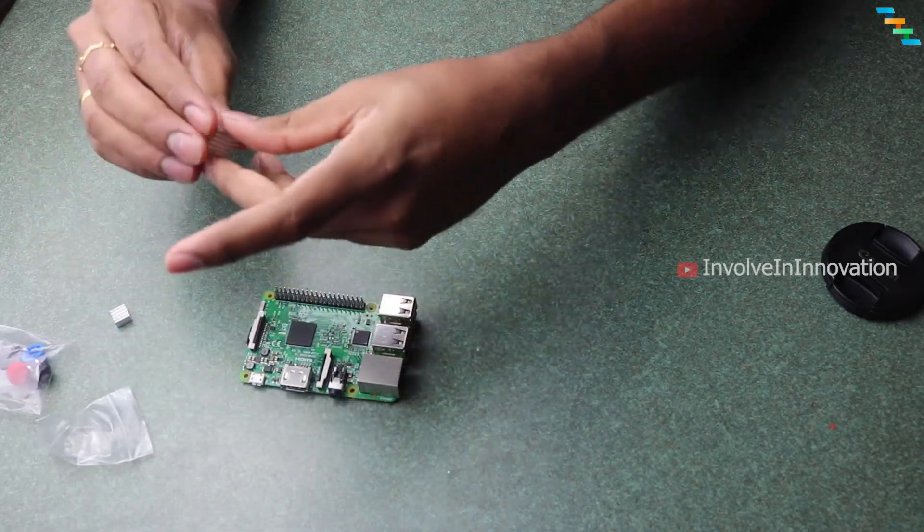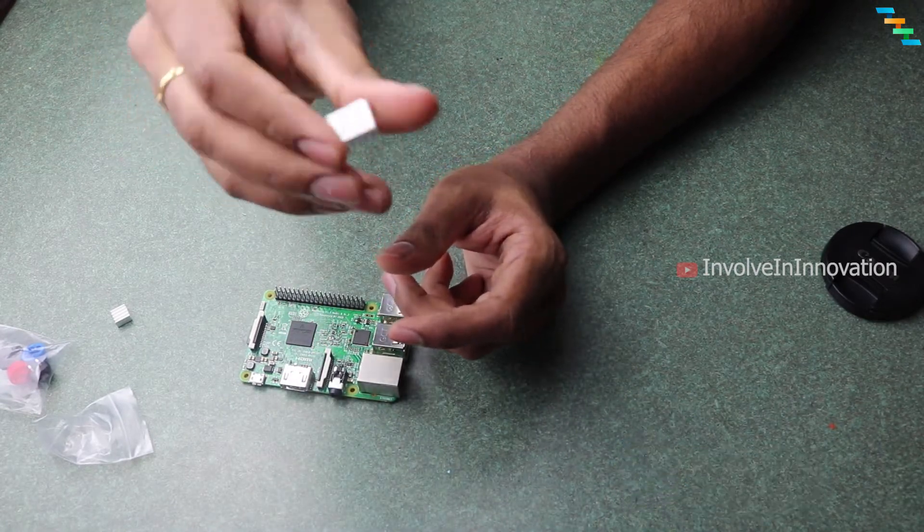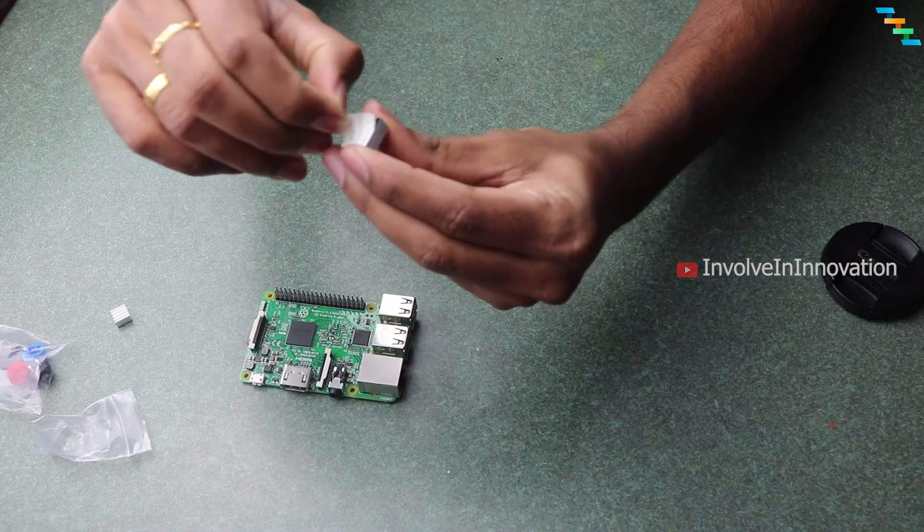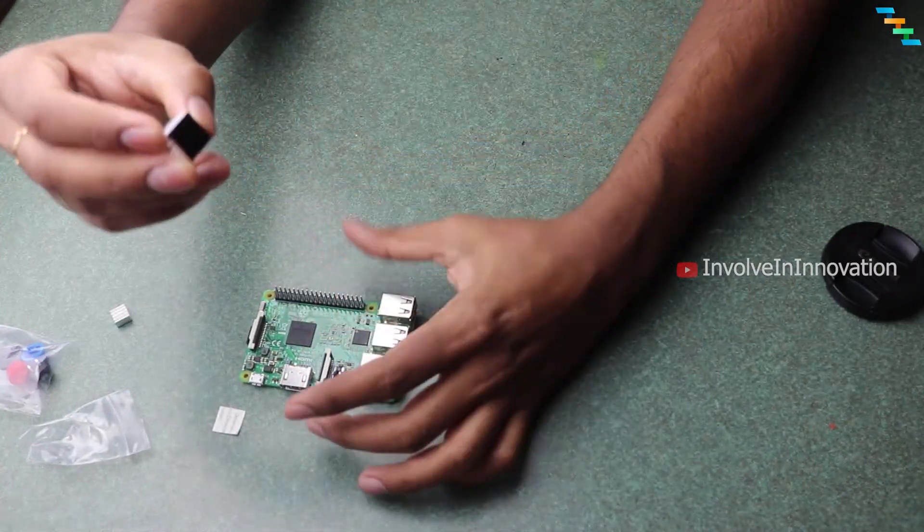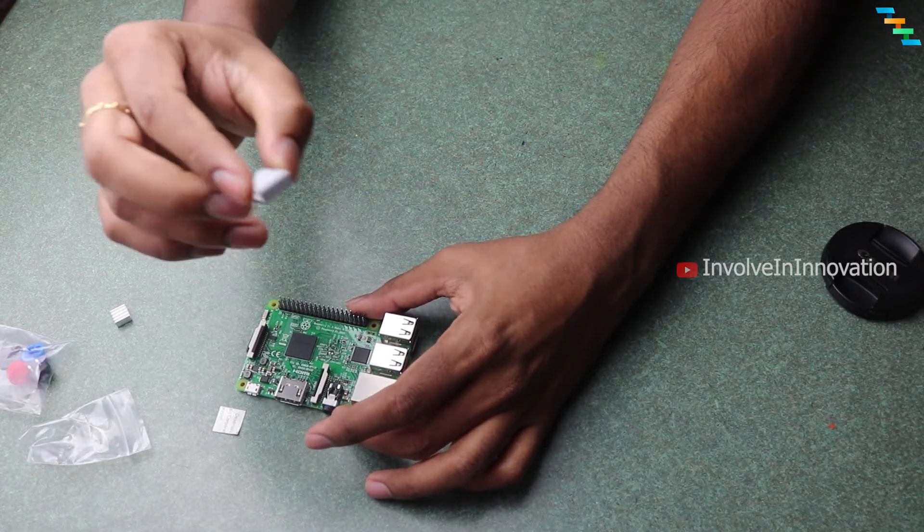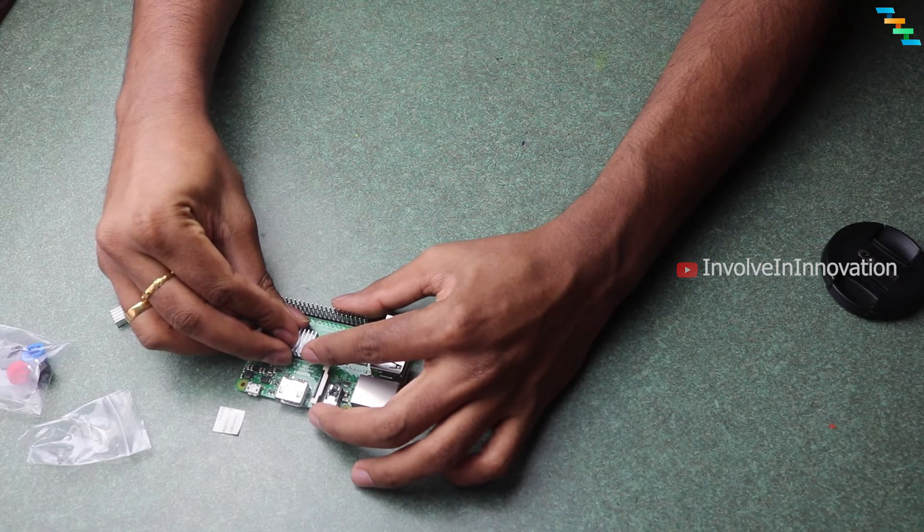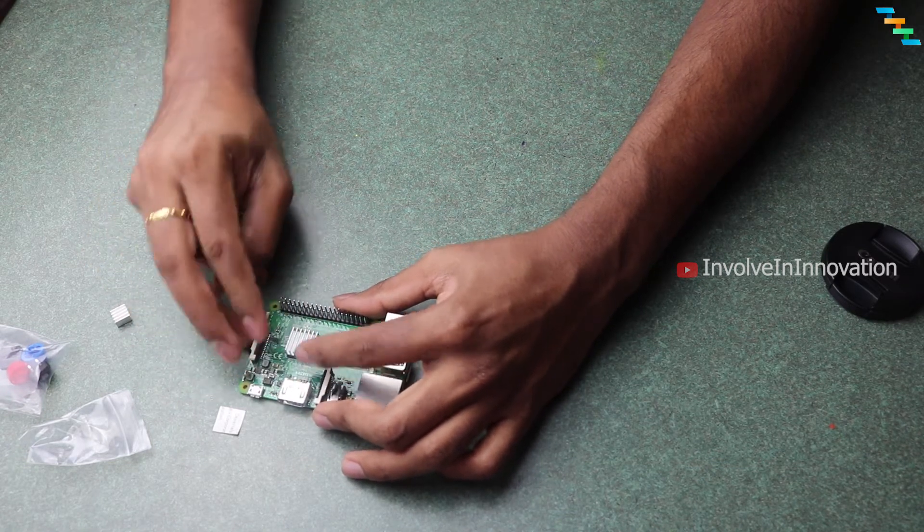First we will install the Heatsink on processor. Peel the sticker in the Heatsink and apply it to the processor. Apply gentle pressure to stick it.